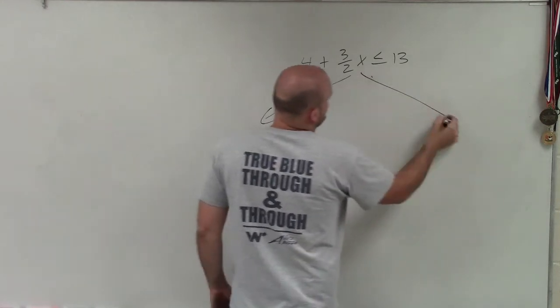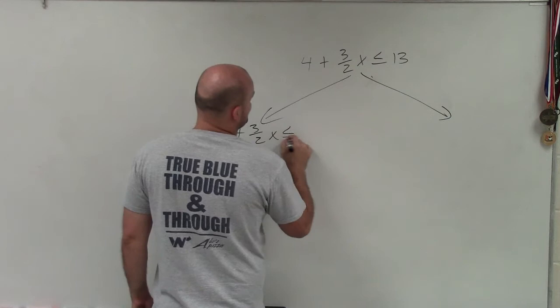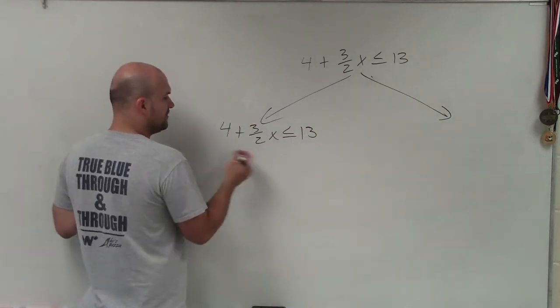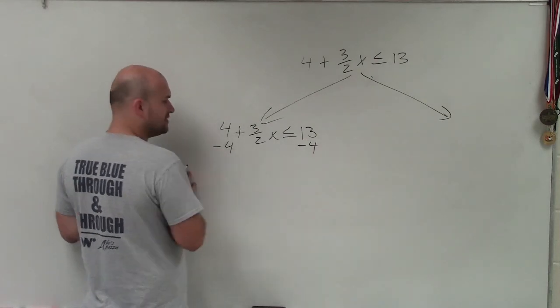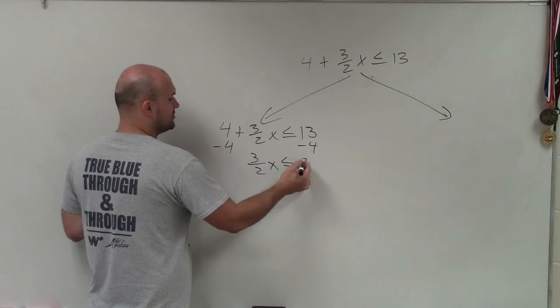So the first way is using our inverse operations. 4 plus 3/2 x is less than or equal to 13. To solve this using inverse operations, the first thing I have to do is undo addition and subtraction. So I have 3/2 x is less than or equal to 9.